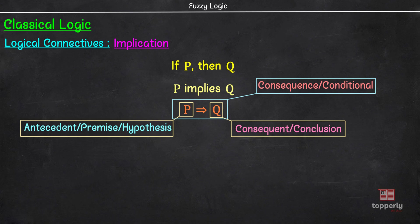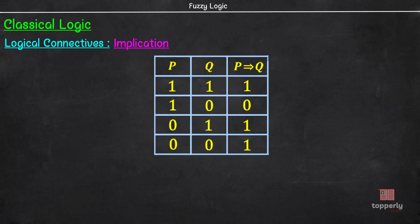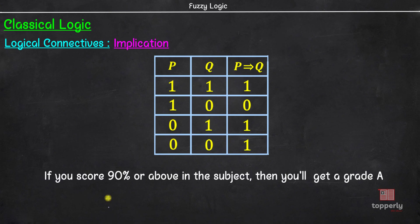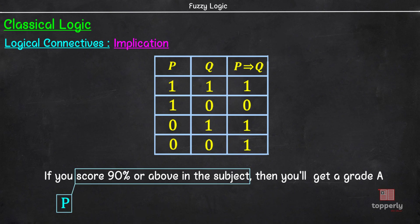Let us take a look at the truth table for implication. To understand this truth table, let us take an example. Suppose you have a statement: if you score 90% or above in the subject, then you will get a grade A. Here, the proposition P is you scoring 90% or above in the subject, and the proposition Q is you will get an A grade. What this statement means is that you are going to be guaranteed an A grade provided you score 90% or above.